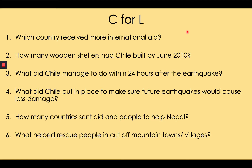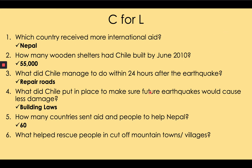Answer the questions from memory. Number 1: Nepal. 2: 55,000. 3: It managed to repair the main roads. 4: Building laws such as Build Back Better. 5: 60 countries were the main ones that sent aid, of which 124 sent smaller amounts of aid. 6: Helicopters. Give yourselves a mark out of 6. If you've got 5 or more, fantastic.